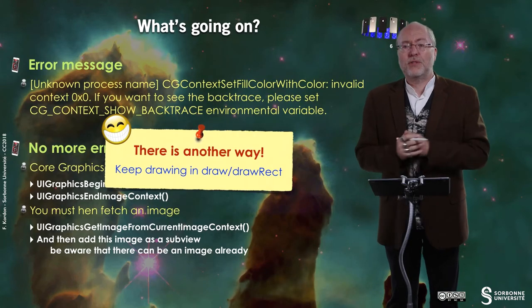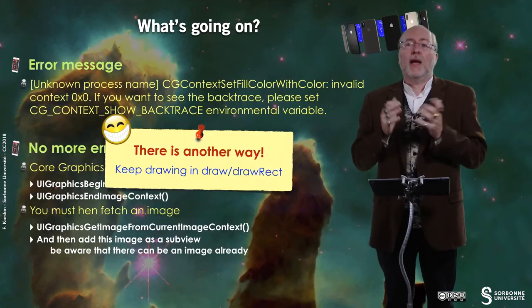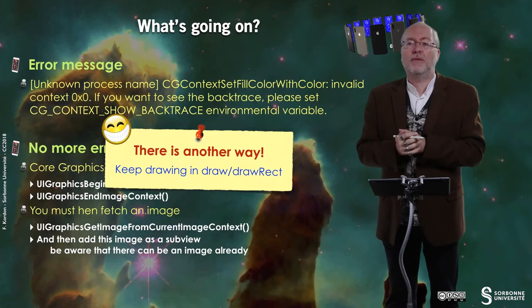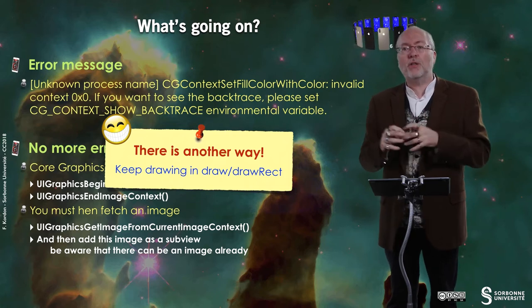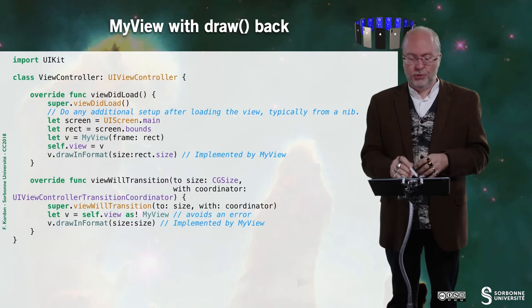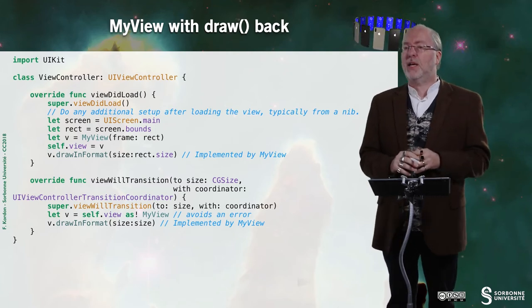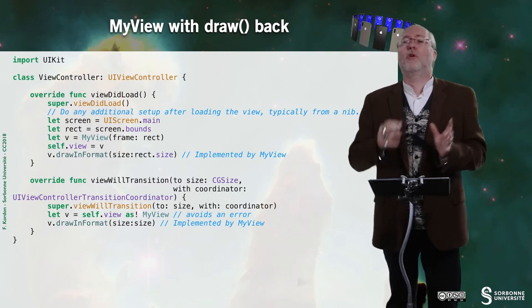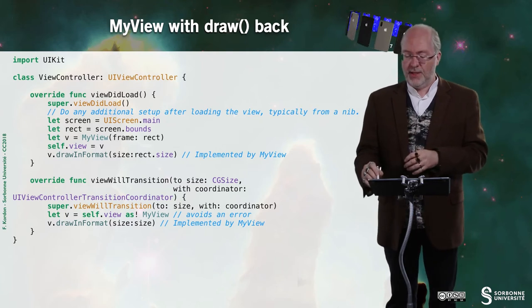But there is another way. You can have the label handled as I did in the example that handles rotation. And you can also have the image handled in drawDrawRect. So, here, the view controller doesn't change at all. You still have the viewDidLoad. You still have the viewWillTransitionToSize. So, this is the U-rotate way to handle things.